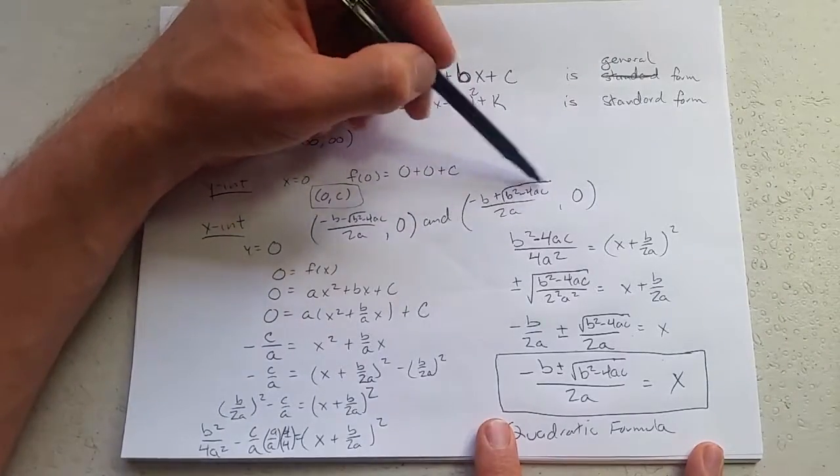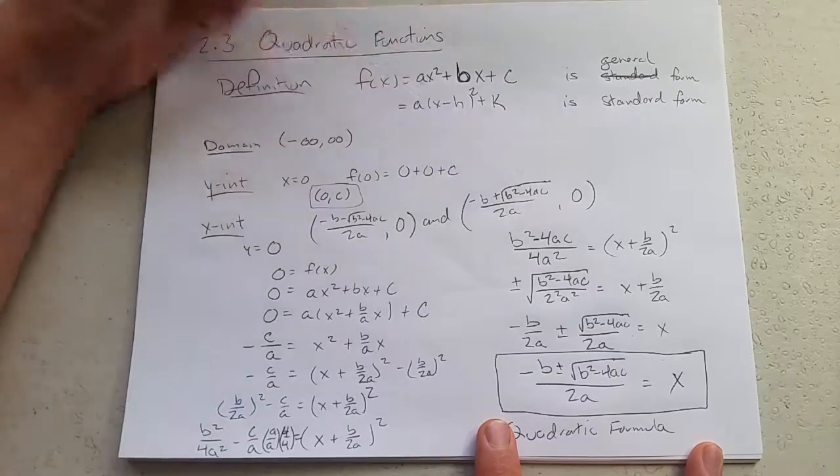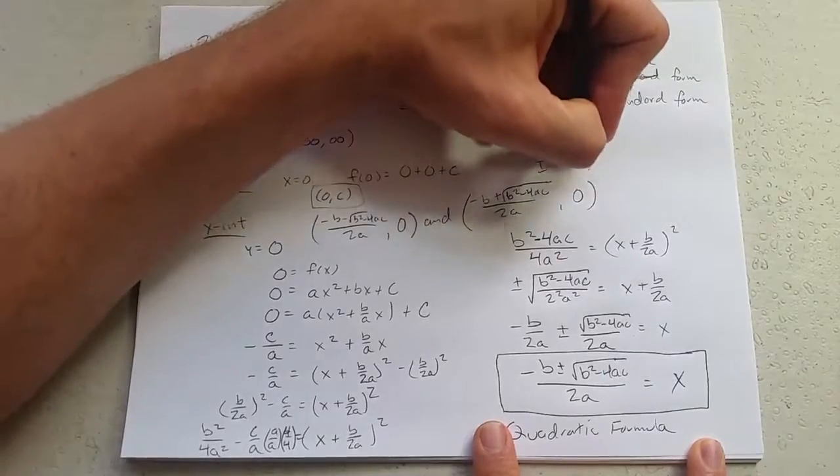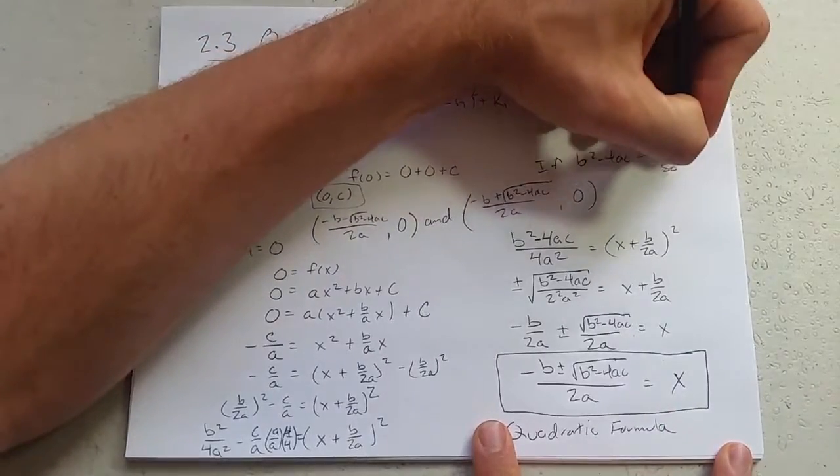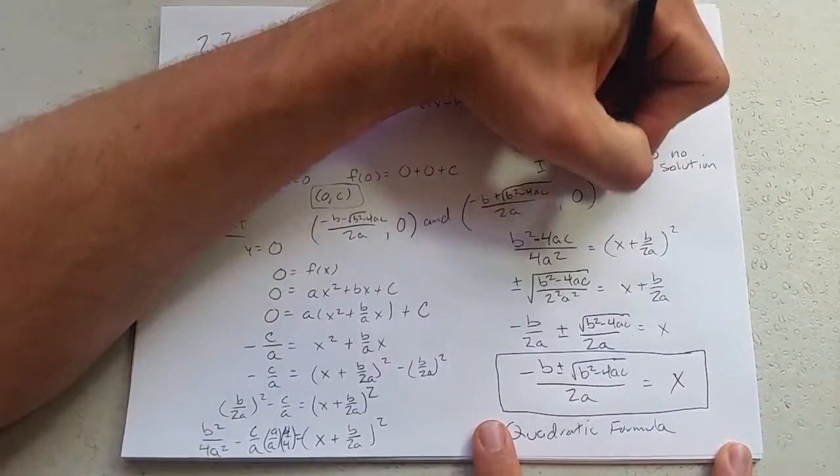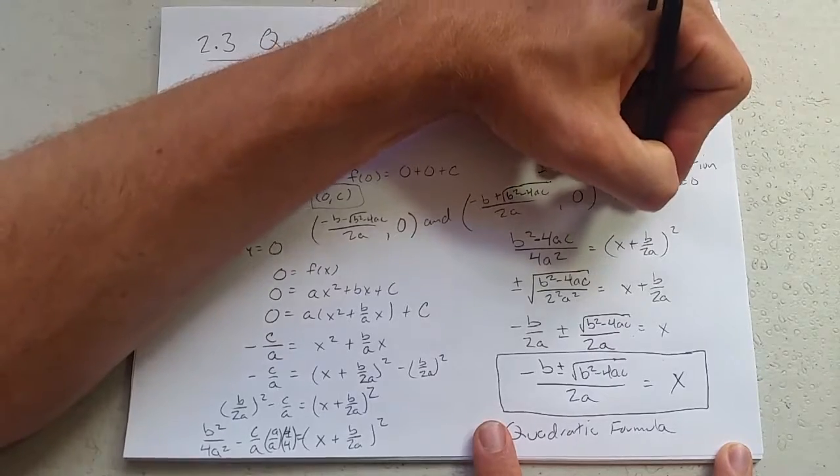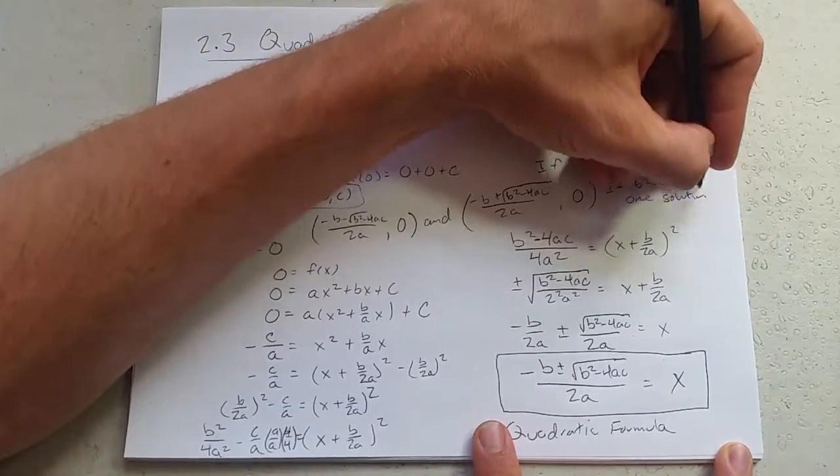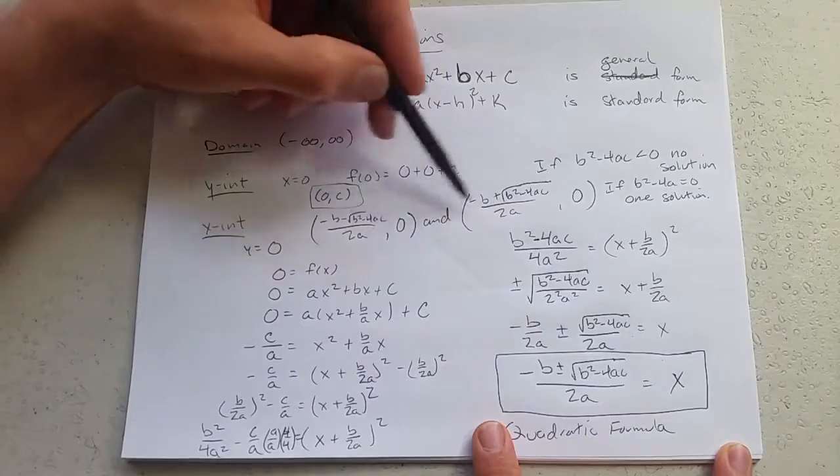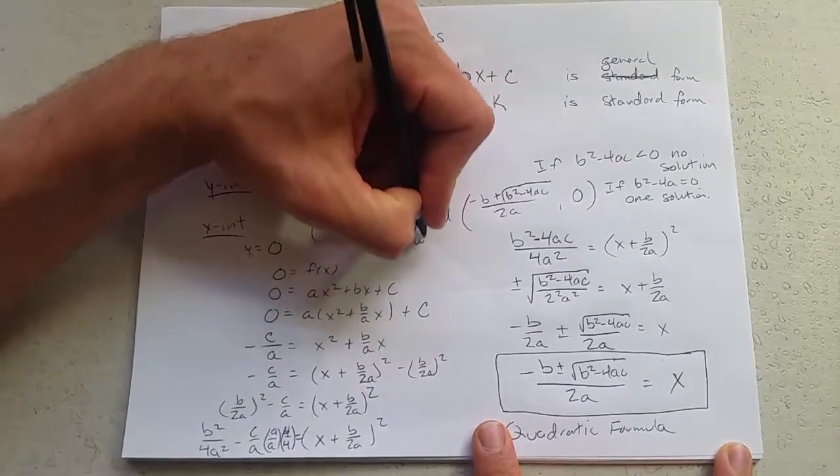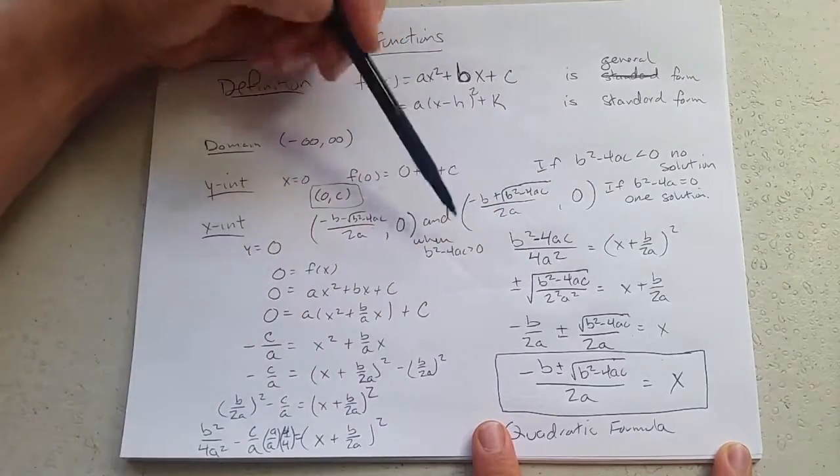Now if you remember the rule about square roots or any even root, can't have negative in here. So what happens if b squared minus 4ac is negative? You actually get no solution. If b squared minus 4ac equals zero, you get one solution. And if b squared minus 4ac is greater than zero, you get two solutions. So you get these two solutions when b squared minus 4ac is greater than zero.